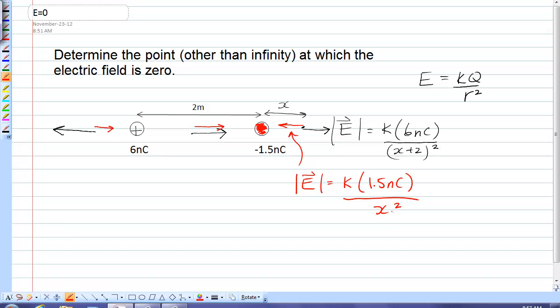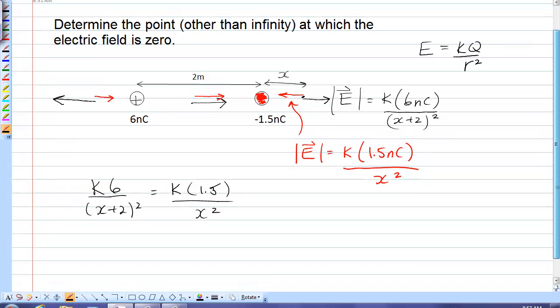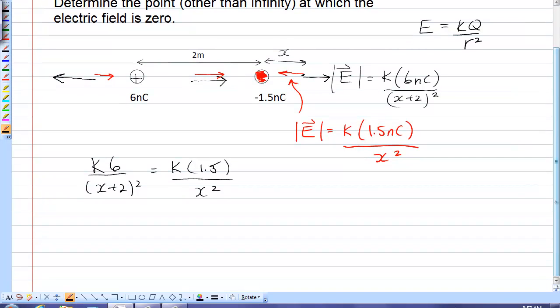To find x, we simply equate these two magnitudes. So I have k times 6 over x plus 2 squared must equal k times 1.5 over x squared. Now you don't have to solve that using the quadratic equation. The k's cancel.